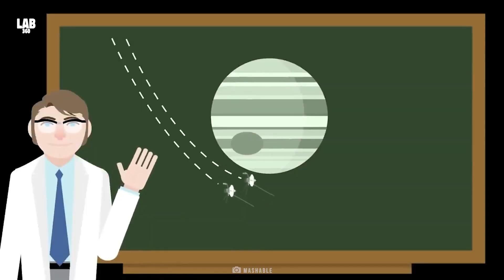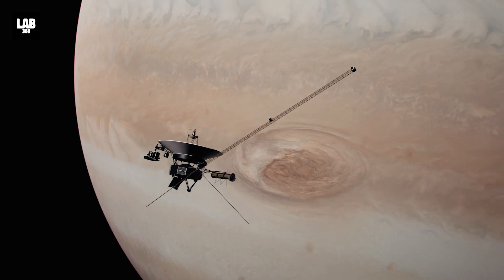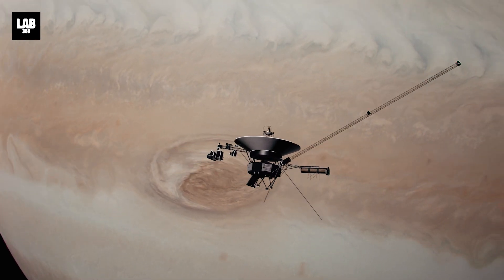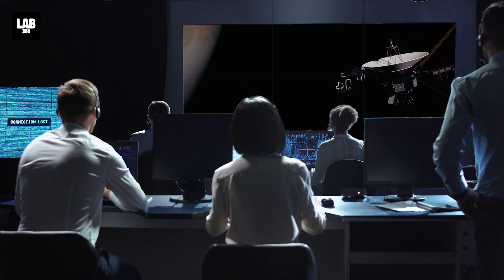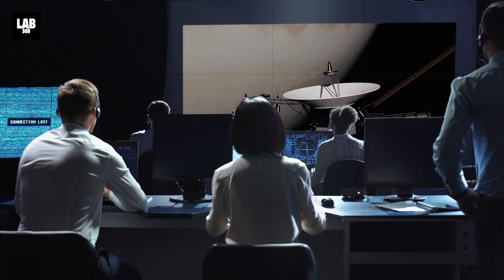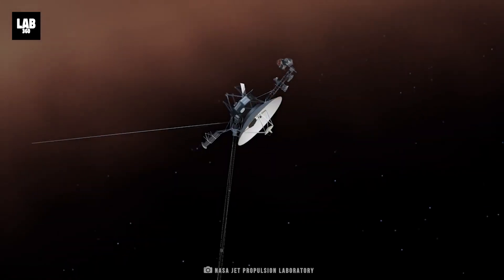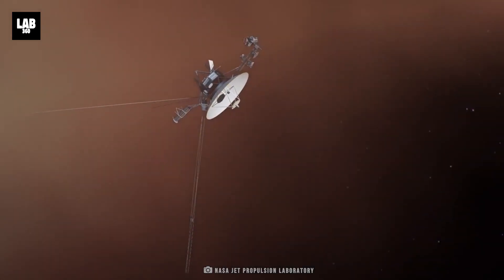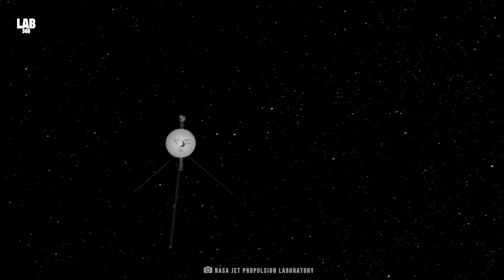First, gravity assist. Gravity assist is all about transferring some of a planet's momentum to the spacecraft as it passes by. In a scenario, Voyager 1 approaches Jupiter, a massive gas giant with a gravitational pull to match. With the assistance of the bright minds in NASA, Voyager 1 passed Jupiter at precisely the correct angle and velocity. The spacecraft was pulled toward Jupiter by its gravitational pull, which increased its velocity.